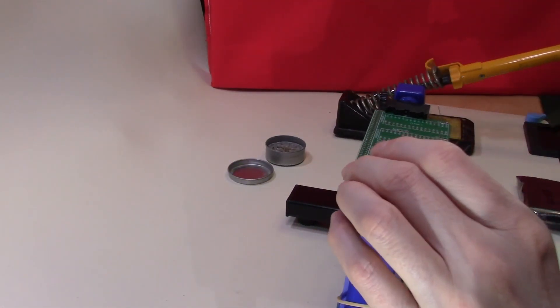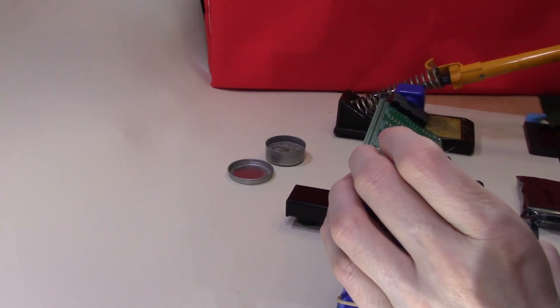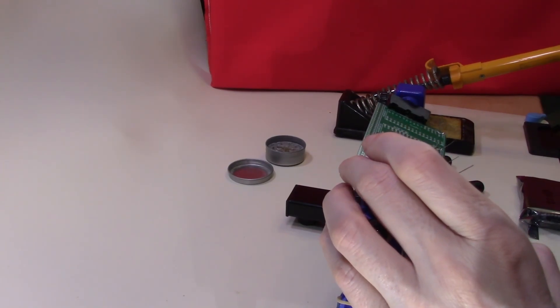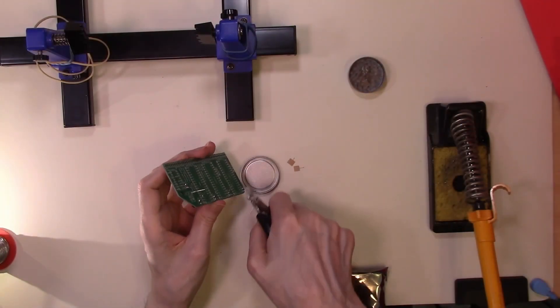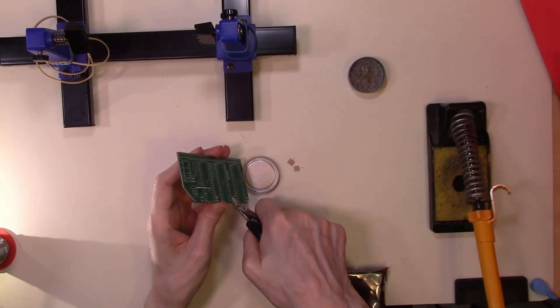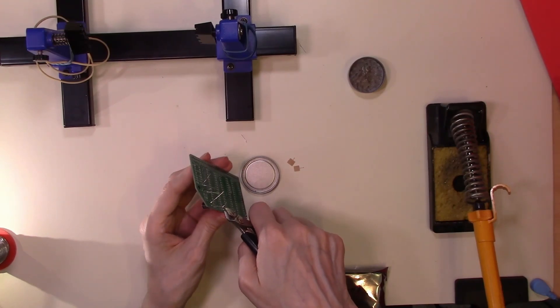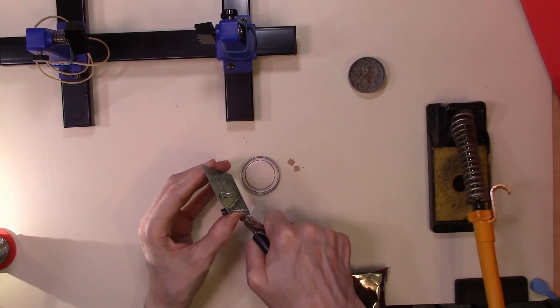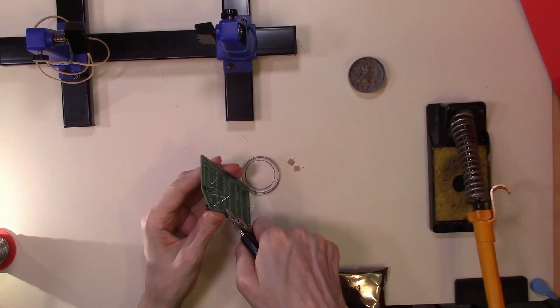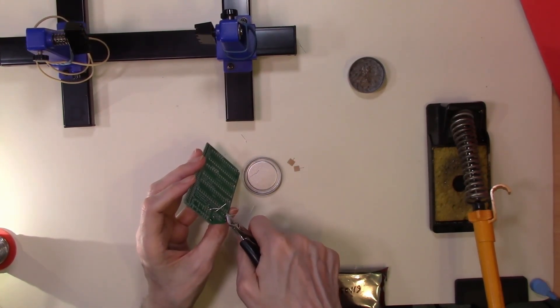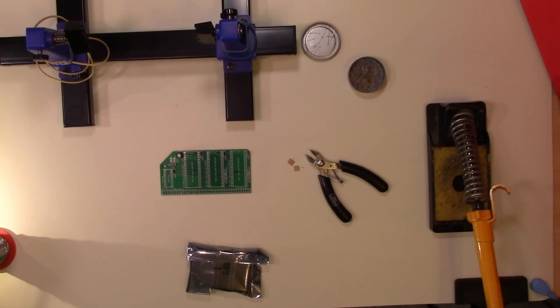And as always, it's good to do a visual inspection to make sure you haven't missed anything. Right, those connections look okay. We can just snip off the excess now. Right, that's our first set of components now on the board.